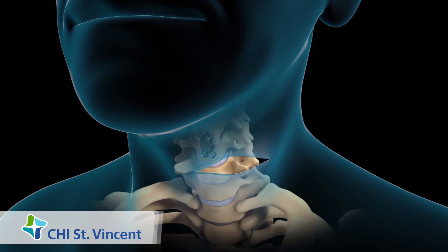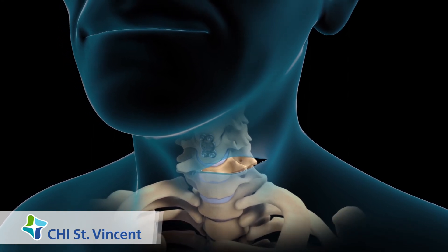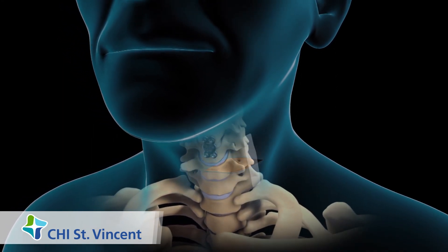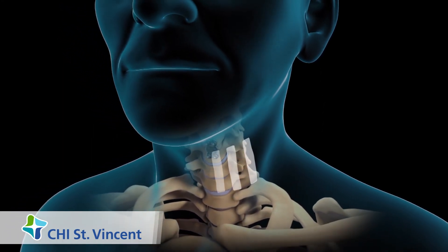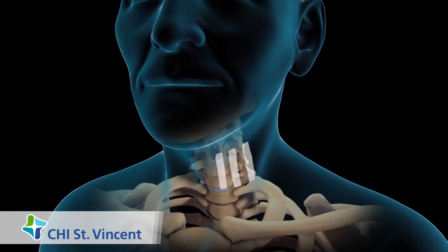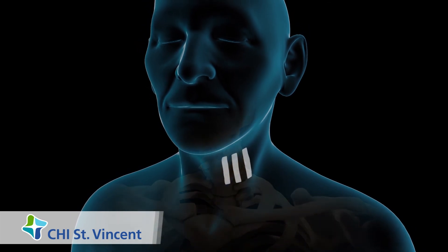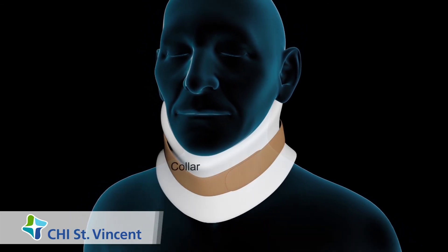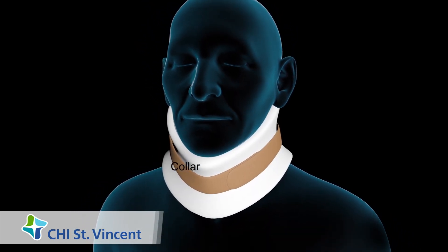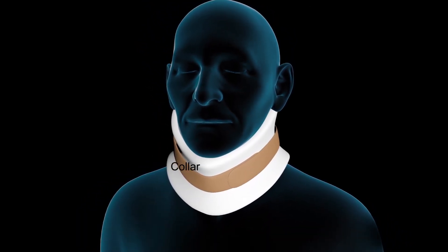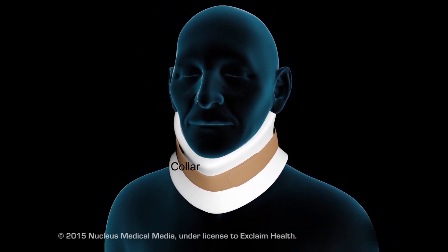Your skin incision will be closed with skin glue or skin closure tape. Your neck may be placed in a collar to keep it still while your vertebrae fuse.